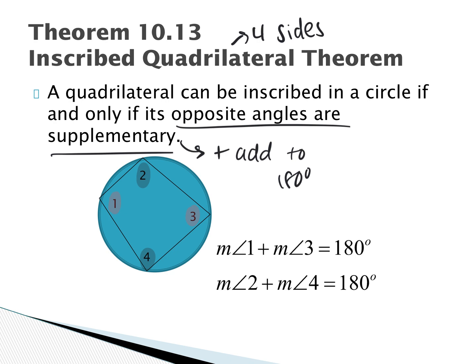In order for a quadrilateral to fit inside a circle so the circle intersects all the vertices, the inscribed quadrilateral theorem must be satisfied — opposite angles must be supplementary.